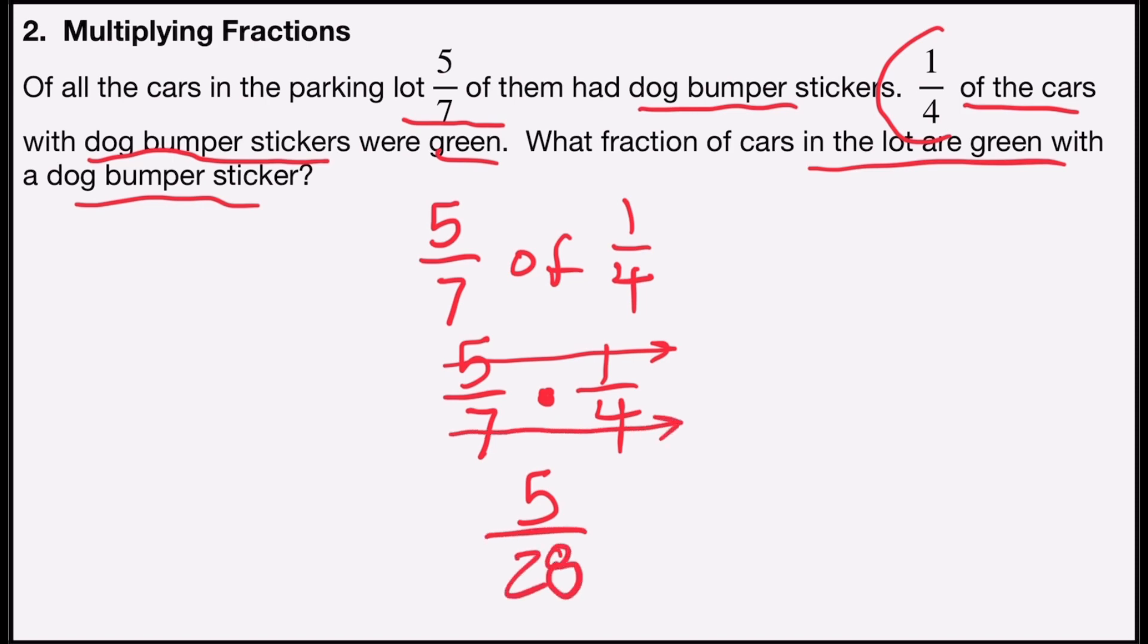And then we need to see if we can reduce. Five over twenty-eight does not have a factor in common, and so that's the answer. Five twenty-eighths of the cars in the lot are green with a dog bumper sticker.